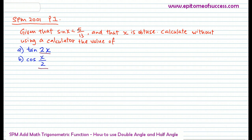Sin x is 5 over 13. If you have watched my previous video on the addition formula, you'll know that this is the same technique to answer this kind of question. When they say sin x is given to you and that x is obtuse, you're supposed to know how to draw the triangle on your own.